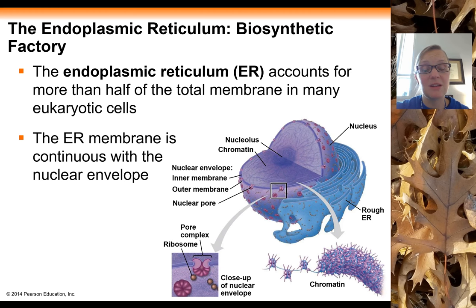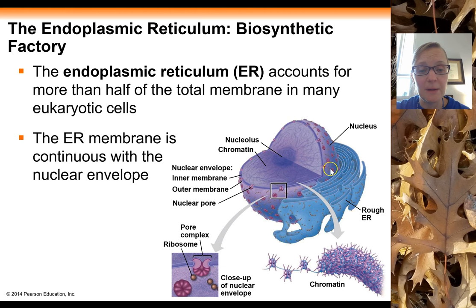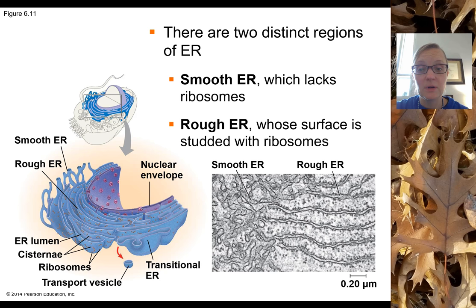The endoplasmic reticulum is a highly abundant organelle, often accounting for more than half of the total membrane of many eukaryotic cells. The ER membrane is continuous with the nuclear envelope, as shown in the blow-up. The ER exists in two different forms: smooth ER and rough ER, which differ primarily in structure and also in function.